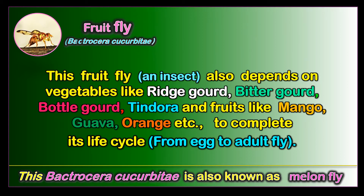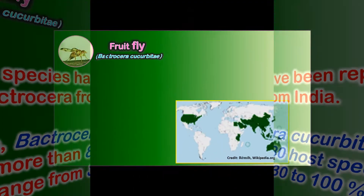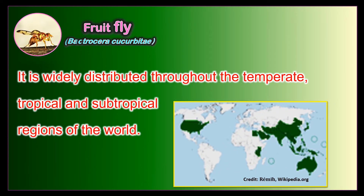Bactrocera cucurbitae is also known as melon fly. More than 40 species have been reported under the genus Bactrocera from India. Among these, Bactrocera cucurbitae is a major one and has more than 80 host species, in which yield losses range from 30 to 100%. It is widely distributed throughout the temperate, tropical, and subtropical regions of the world.